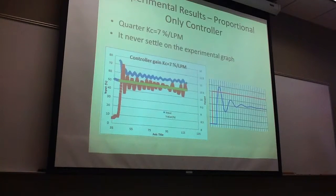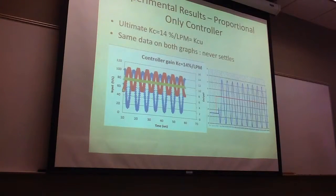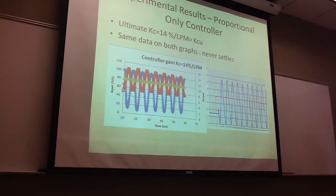For the quarter region, the Kc is equal to 7 on the left, and it's equal to 9.5 on the right. And the ultimate Kc corresponds between the experimental and the model. There are about 14.